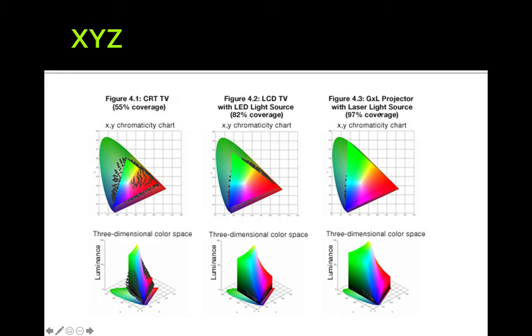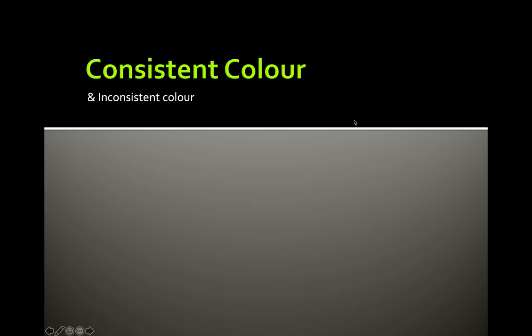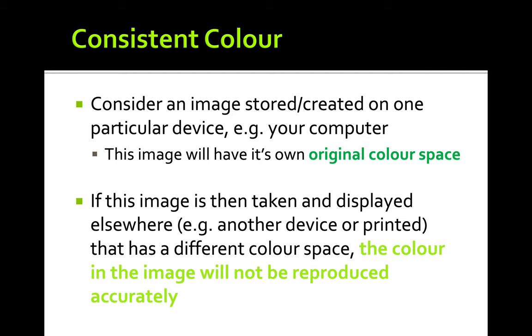Cathode ray tube TVs can only cover about 55% of the visible spectrum. LCD TVs improved coverage to 92%, and even the latest display technologies only cover about 97% of the visible spectrum.